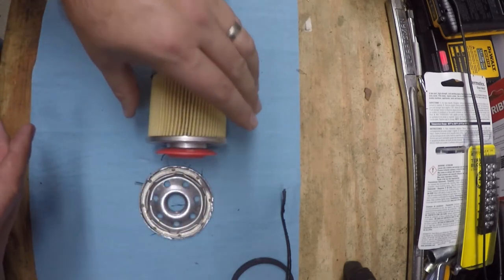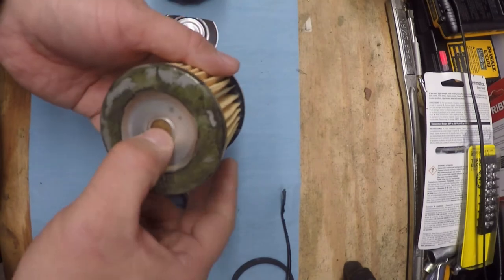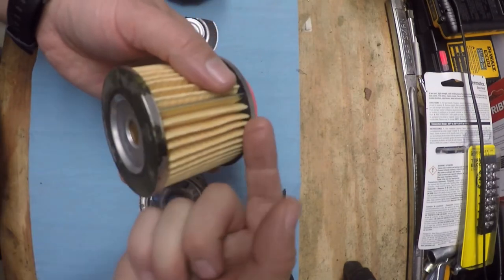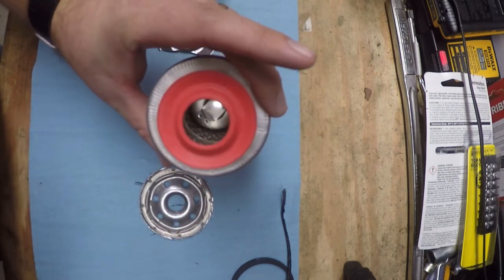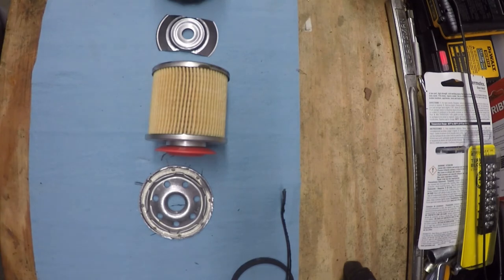And what that does, if your filter element would somehow become clogged, the pressure will be enough here to push this open and then allow oil to bypass around the filter element and flow straight out back through the engine. So that ensures if your filter gets clogged you wouldn't starve the engine of oil completely and end up blowing up your engine.